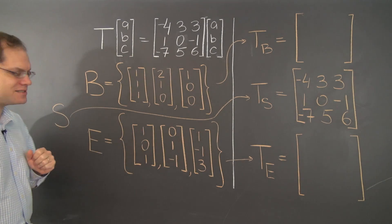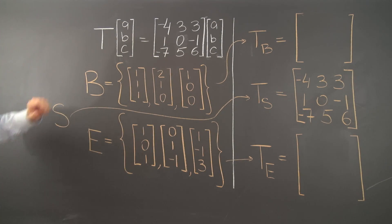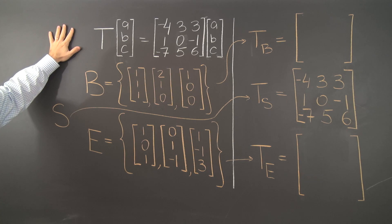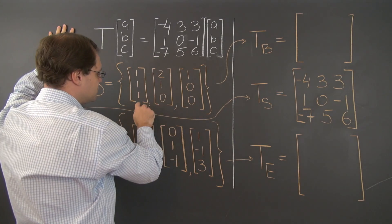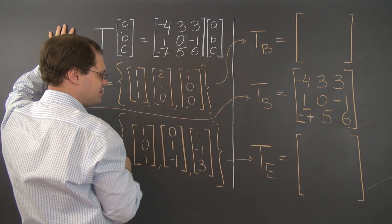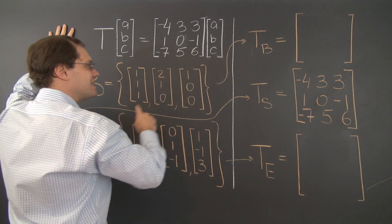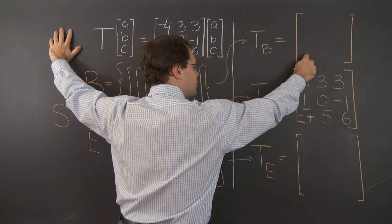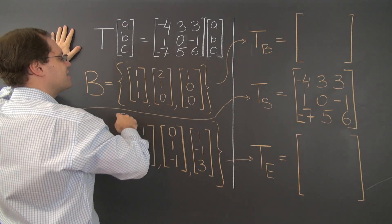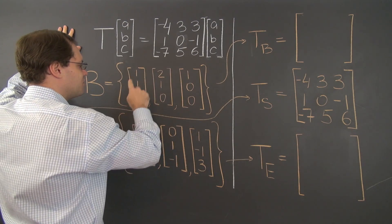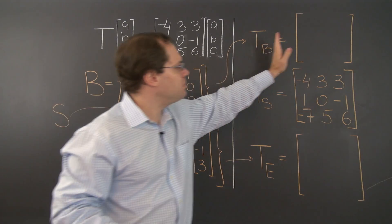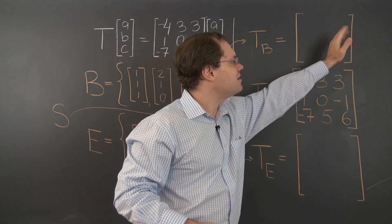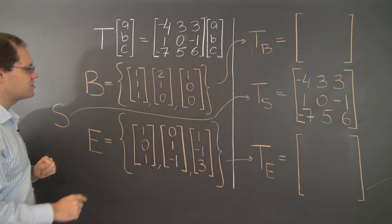So I'm realizing I didn't leave myself much working space, so I'll use it here. The strategy, as always, is to apply this linear transformation to each of the basis elements. And then it's the coefficients of these resulting vectors with respect to the same basis that appear in the columns of that matrix.